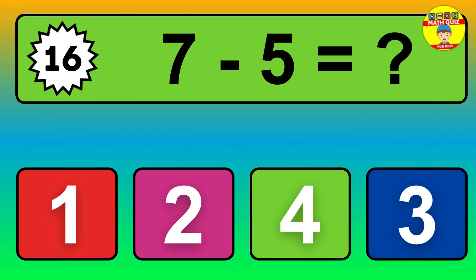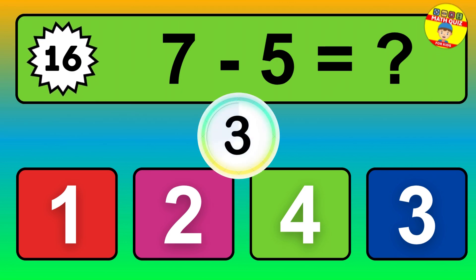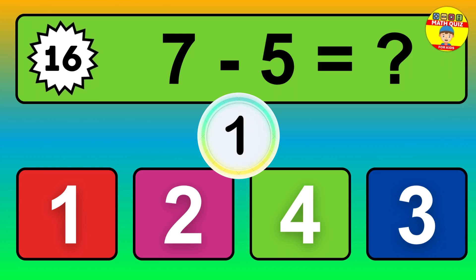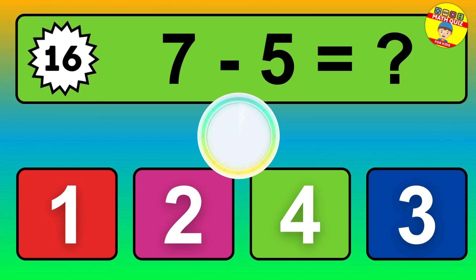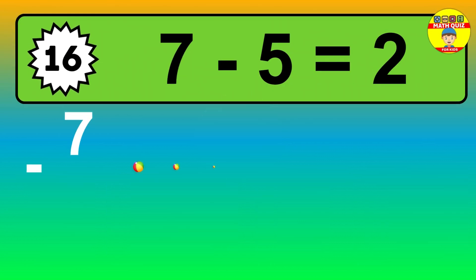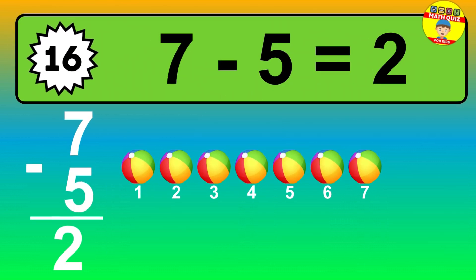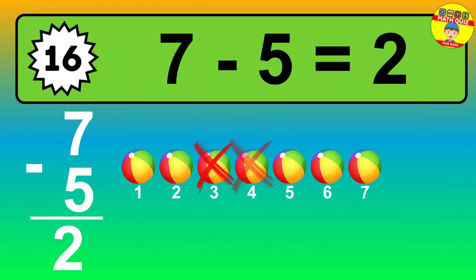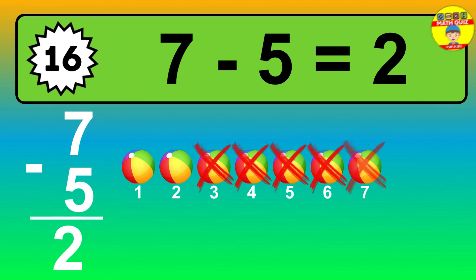Question 16. 7 minus 5 equals what? The answer is 7 minus 5 is 2. Let's count it. 1, 2.